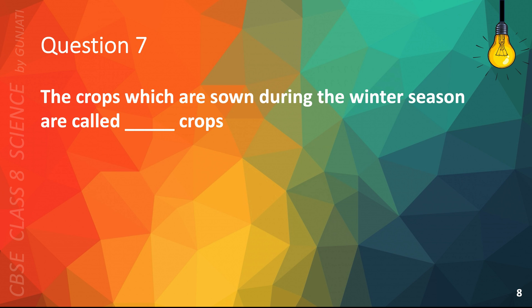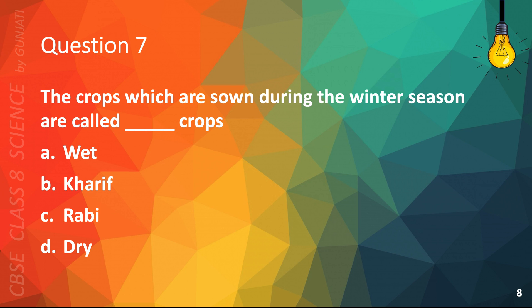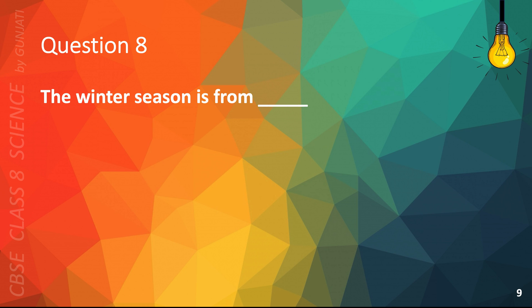Question 7. The crops which are sown during the winter season are called blank crops. A. Wet, B. Kareef, C. Robbie, or D. Dry. The correct answer is C. Robbie.